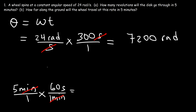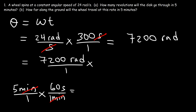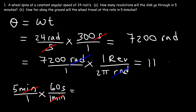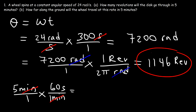Now we need to convert 7,200 radians to revolutions. One revolution equals 2 pi radians, which is 360 degrees representing a full circle. So take 7,200 and divide by 2 pi, or 6.28, and you get 1,146 revolutions. So the wheel is going to make 1,146 complete revolutions during the 5 minutes.